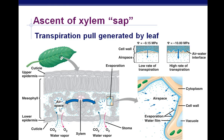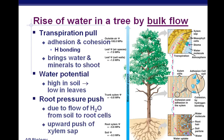Just think about whether you evaporate water on your body faster when it's wet outside versus dry outside — of course, during dry times. We also have the rise of water in a tree by bulk flow, where bulk flow means lots of material being moved at one time.